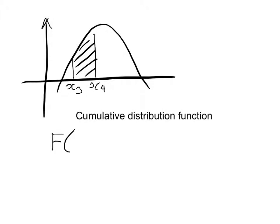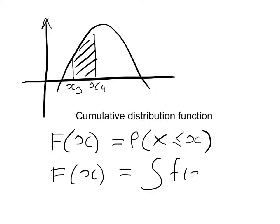The definition of the cumulative distribution function, we use a capital F, is that F of x will tell us the value of probability that x is less than or equal to a particular value of x. And F of x itself is going to equal the integral of the function we're working with.